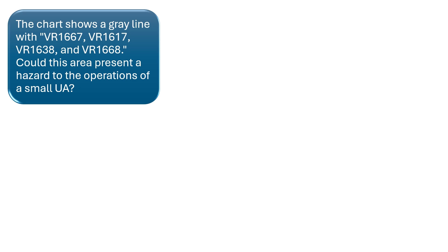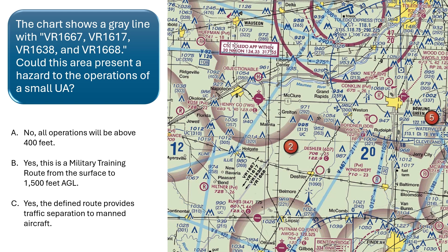The chart shows a gray line with the letters and numbers VR1667, VR1617, VR1638, and VR1668. Could this area present a hazard to the operations of a small unmanned aircraft? These letters and symbols represent military training routes, used by military aircraft to maintain proficiency in tactical flying maneuvers. Military training routes with four digits represent military flights at or below 1,500 feet above ground level, while routes with three digits represent flights above 1,500 feet AGL. The military training routes highlighted would indicate VFR flight at 1,500 feet or below, presenting a potential hazard to the operations of a small unmanned aircraft.